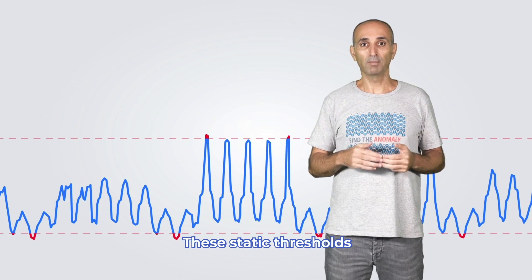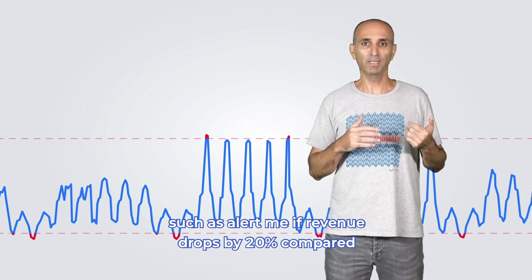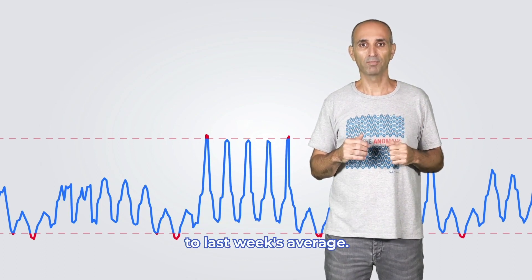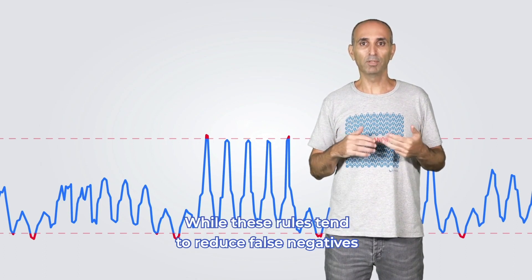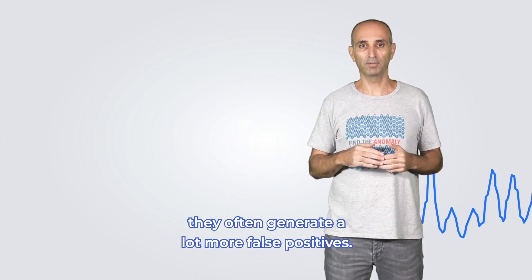These static thresholds can be slightly improved with simple statistical rules such as, alert me if revenue drops by 20% compared to last week's average. While these rules tend to reduce false negatives compared to static thresholds, they often generate a lot more false positives.